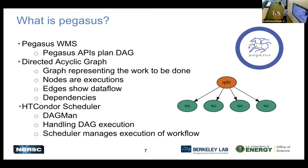Each one of these edges shows both the data flow and the dependencies. We can see that we need to run the split operation first in order to go on to these word counts. All of this is run using the HT Condor scheduler - Pegasus will take your representation and turn that into a DAG that HT Condor understands, and it will use that scheduler to actually execute everything.